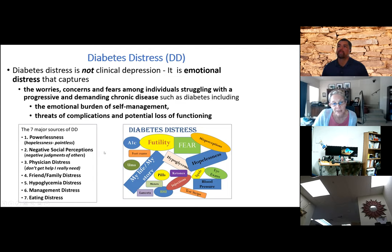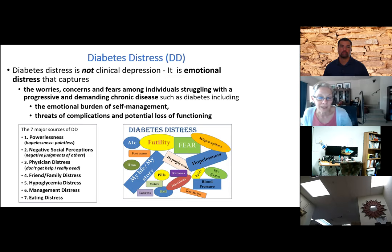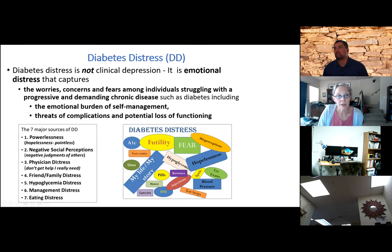The major sources of diabetes distress: number one is powerlessness and hopelessness — 'bad things are going to happen to me no matter what I do, why even try?' — that sense of futility. Second is the scarlet letter — negative social perceptions, feeling judged, that stigma we talked about. Third, surprisingly, is physician distress: 'I'm not really getting the help I need. Maybe my physician has negative perceptions about me, or they don't know what to do, or the appointment's too short, or they don't understand how hard it is.'